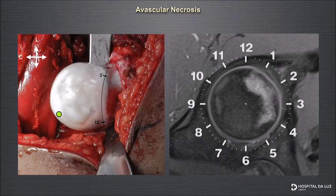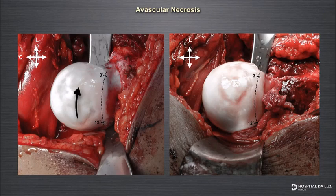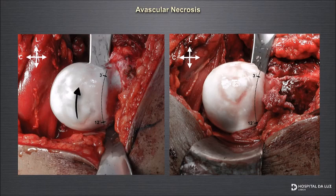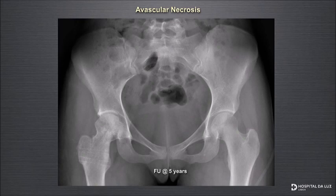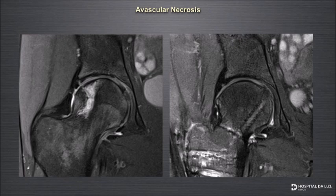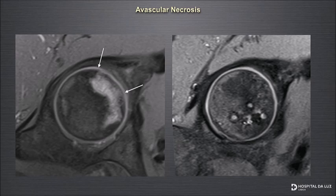We decided to do a femoral neck rotation osteotomy. Because a posterior rotation would put the necrotic area on the weight-bearing zone, we chose a more challenging anterior rotation of the femoral head. This puts tension on the retinacular flap, but with this surgery you can control the amount of tension on the vessels and monitor when the head stops bleeding. A 25-degree rotation — two hours on the face clock — was enough to unload the area. At five-year follow-up there was no progression to osteoarthritis, and the MRI shows some collapse but improved compared to before.